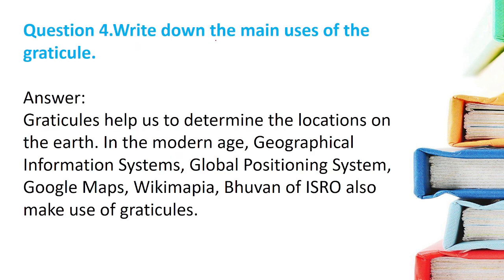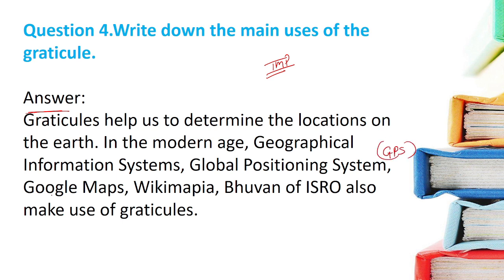Question 4: Write down the main uses of the graticule. The graticule helps us determine locations on the earth. In the modern age, Geographical Information Systems (GIS), Global Positioning System (GPS), Google Maps, Wikimapia, and ISRO's systems all make use of graticules.